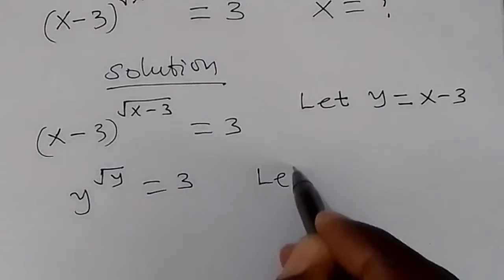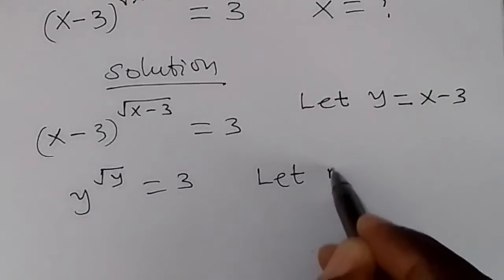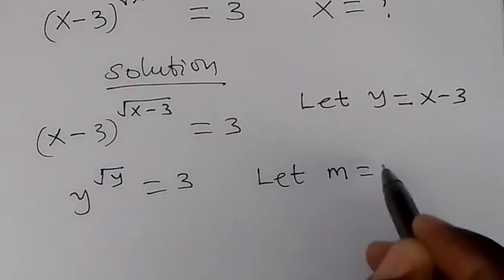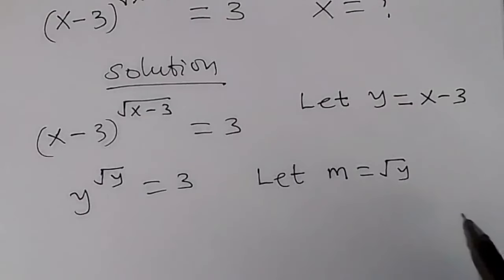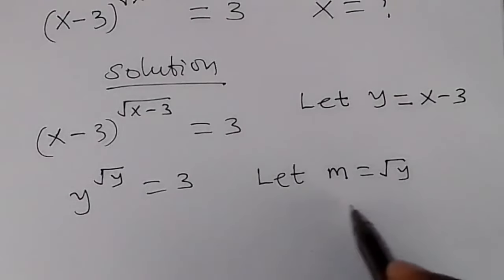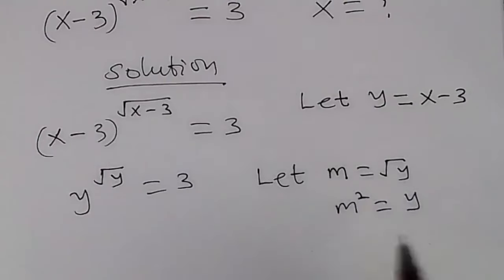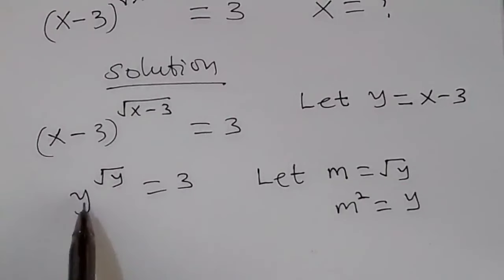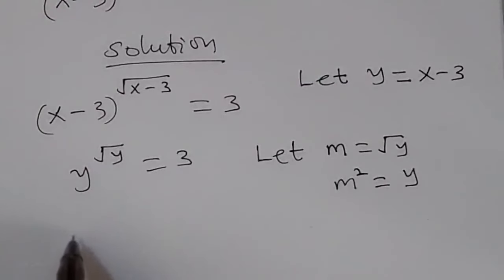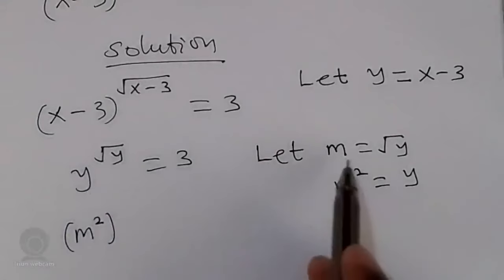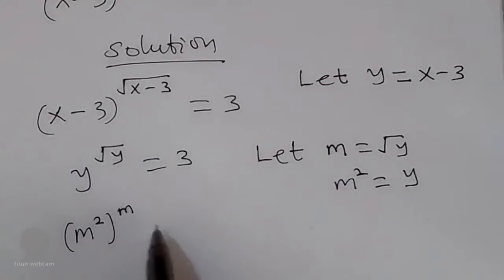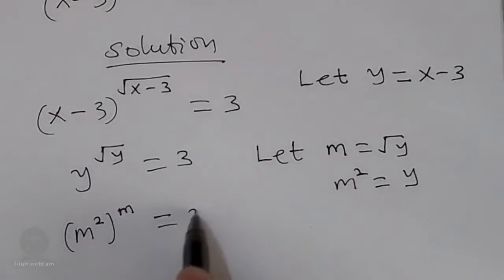We can make a further substitution. Let m equal root y, so that m squared equals y. By substituting y equals m squared into the equation, we have m squared, the whole raised to root y, which is the same as m, as the exponent. So m squared raised to m equals 3.